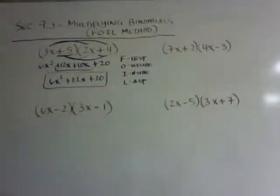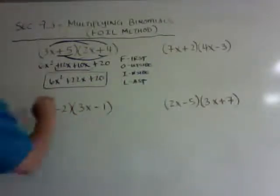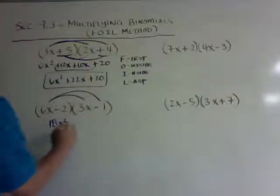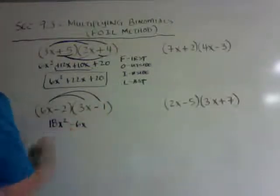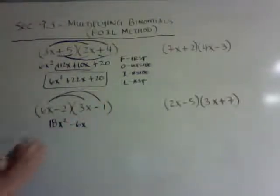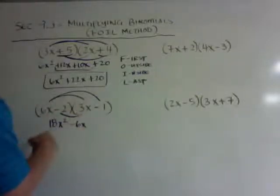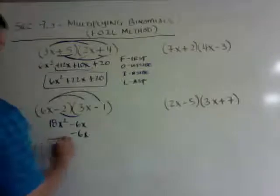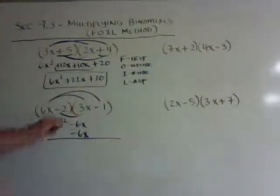Here's the other way of doing it. So when I do first times first, I get 18x squared. When I do outside, I get minus 6x. And then here's where it's a little different. When I do the inside, I get negative 6x again, because negative 2 times 3.